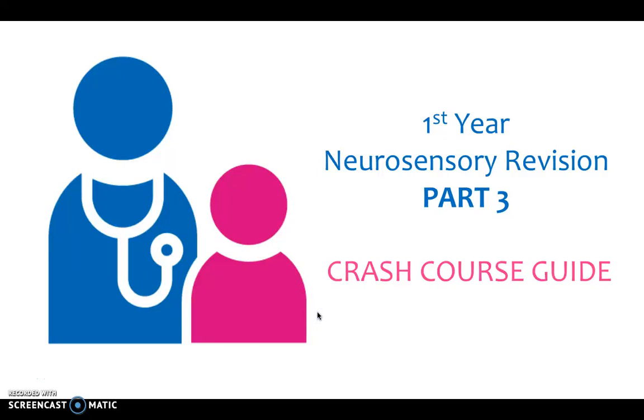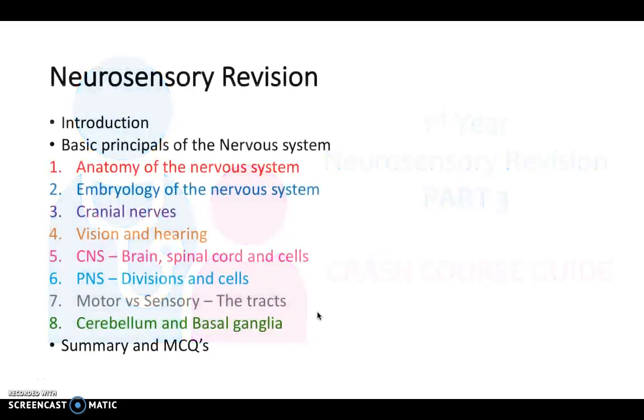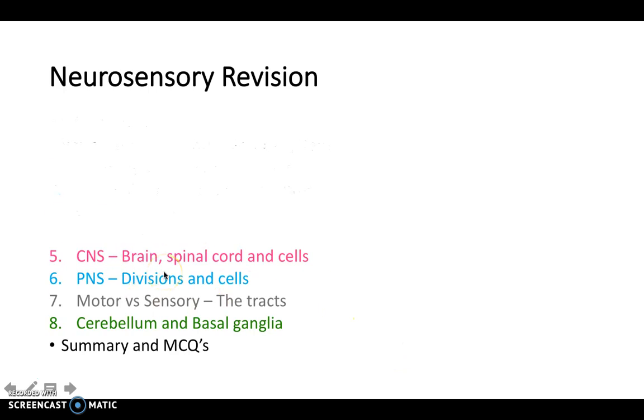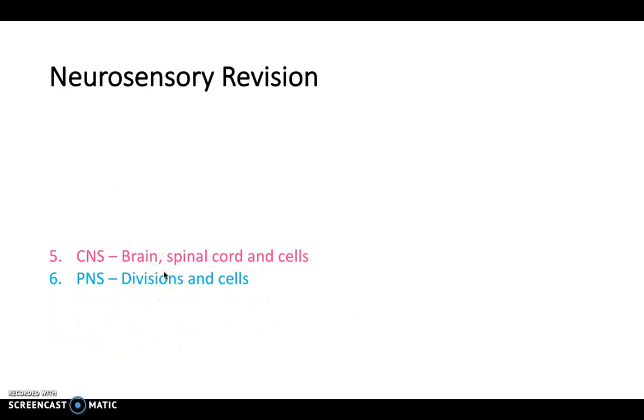Hello and welcome back to Crash Course. Today we're going to be continuing to look at the neurosensory system. Essentially, the neurosensory system is made up of an absolute wide variety of aspects, and what we're really going to be focusing on today are the central nervous system and the peripheral nervous system. What this will involve is us comparing the different cells that exist in each of the two systems, as well as having a look at the functional divisions.